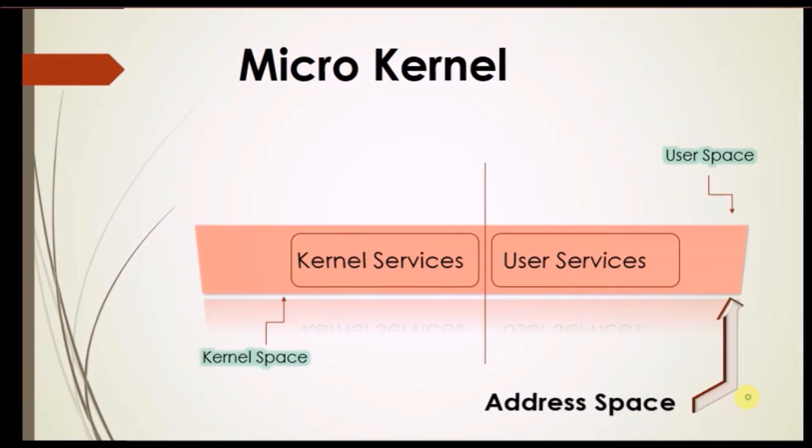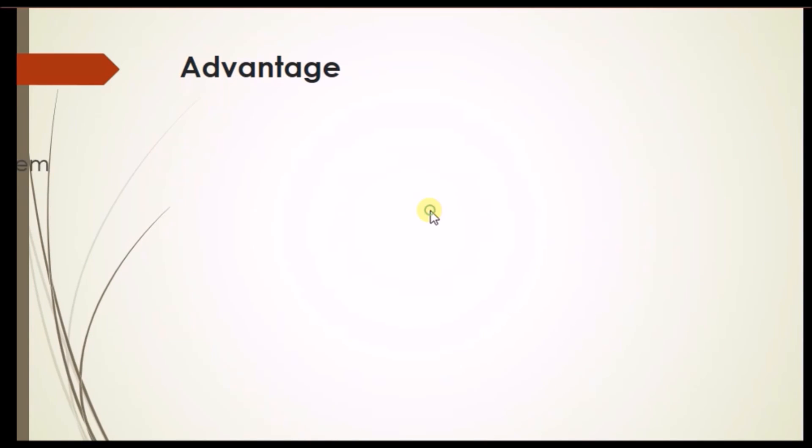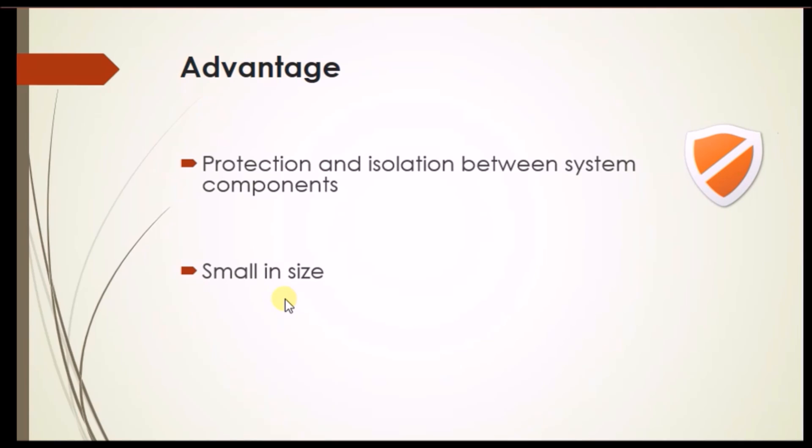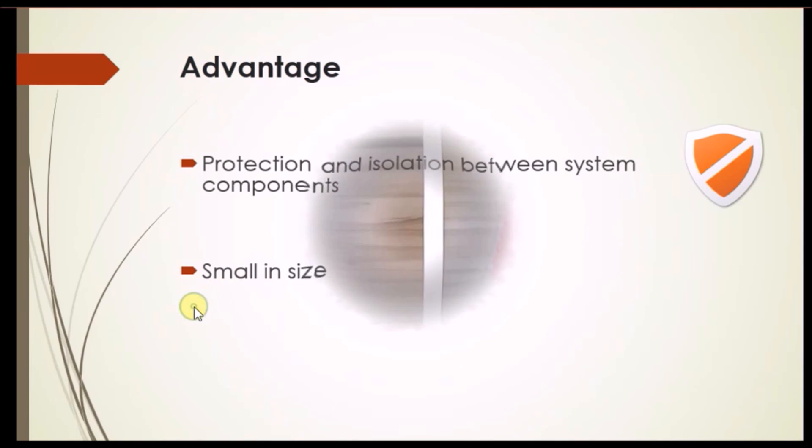Now I want to tell you about the advantages of microkernel. The first one is protection and isolation between system components. I will explain it later through example. The second example is it is small in size because kernel service and user services have separate address space, so we need to write code separately. That's why it is small in size.